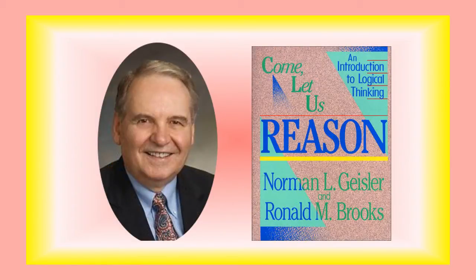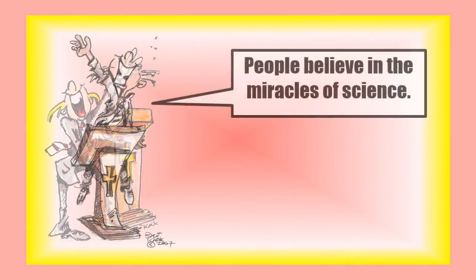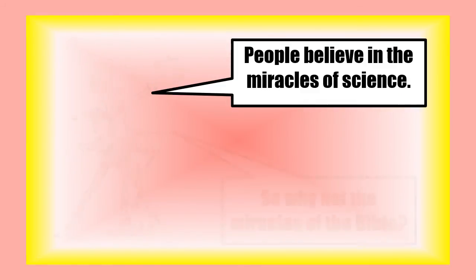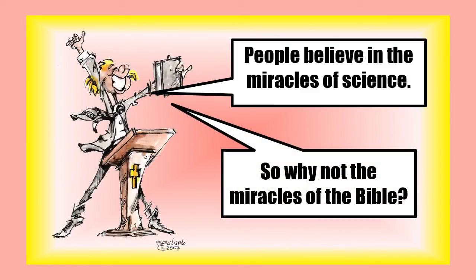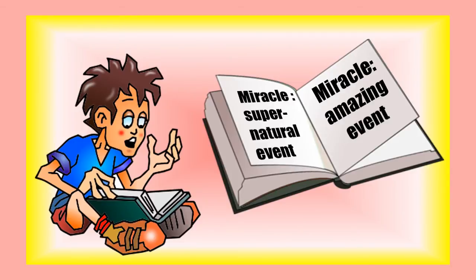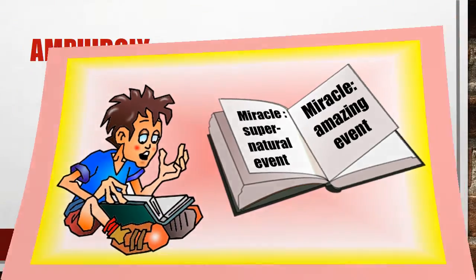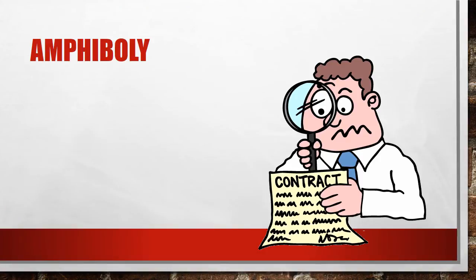The Christian philosopher Norman Geisler in his book Come Let Us Reason gives a good example of this — he's not very happy with bad arguments even when offered on behalf of his own religious views. If somebody says people believe in the miracles of science, so why don't they go on to believe the miracles of the Bible? There's an argument here, but it turns on an equivocation. Miracle can mean a supernatural event, or it can mean something that's just astounding. Whenever you think an equivocation is present, you should be able to spot the term being equivocated upon and tell the arguer the two distinct senses in which they're using it.